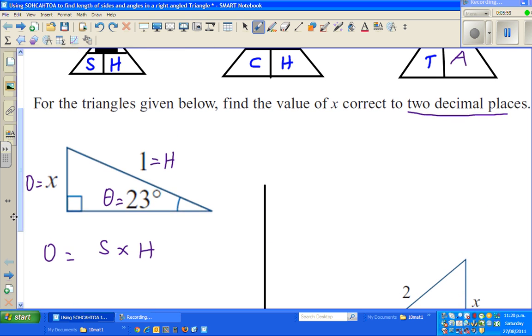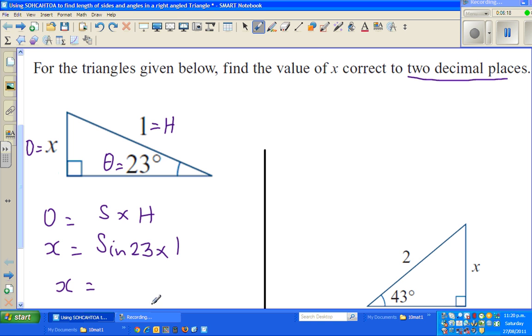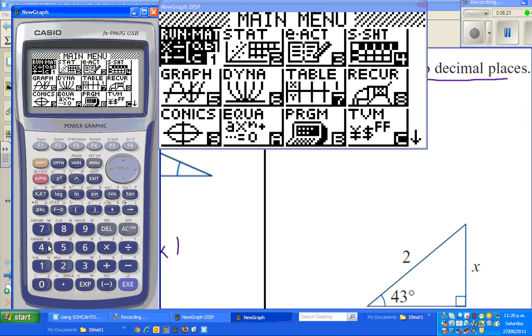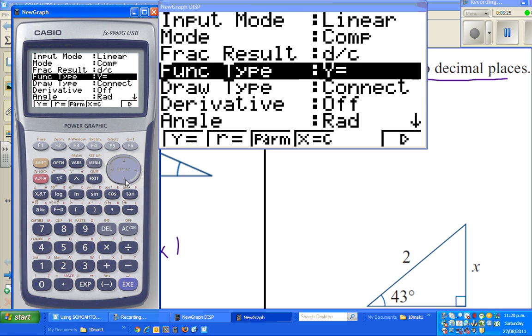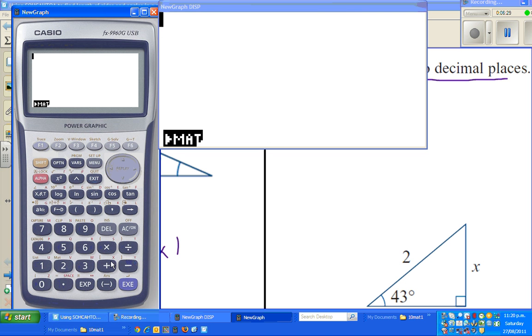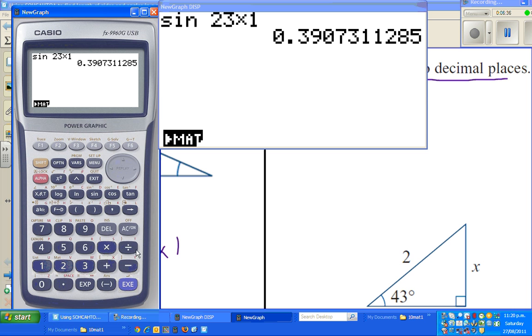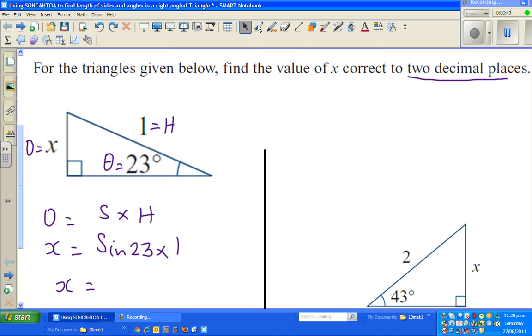Now I have to calculate. What is my O? O is X. S stands for the sine of the angle. So I will say X is sine of 23 times hypotenuse, which is 1. I will use a calculator. My calculator is always set on gradients, so I have to change to degrees because we are dealing with degrees. Sine of 23 times 1, and the answer is 0.39 to two decimal places. So the answer is X is 0.39. Units are not there, so you don't need to write the units.